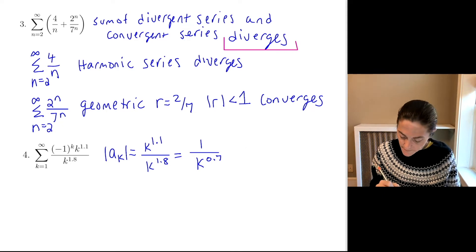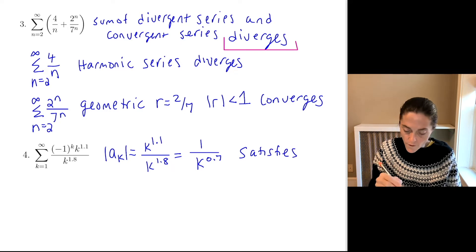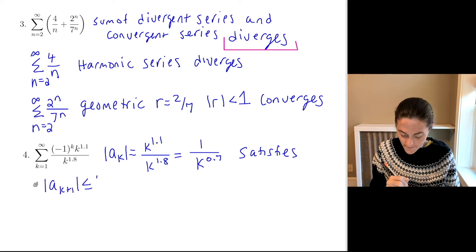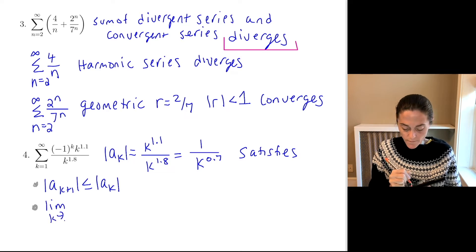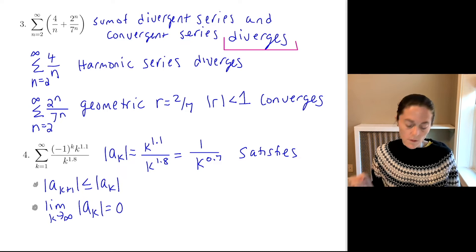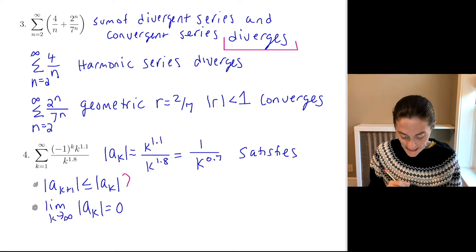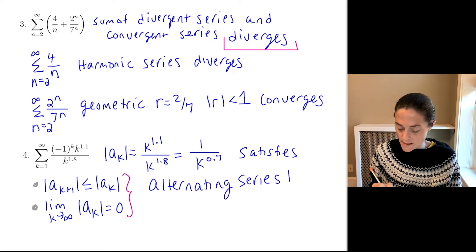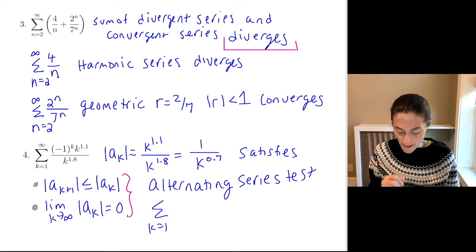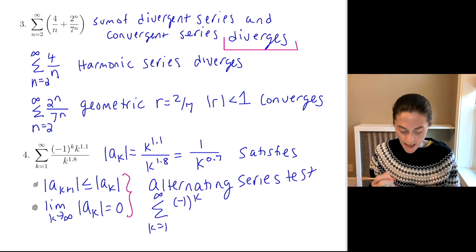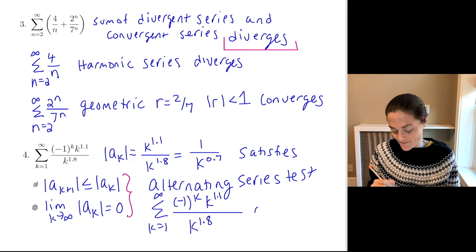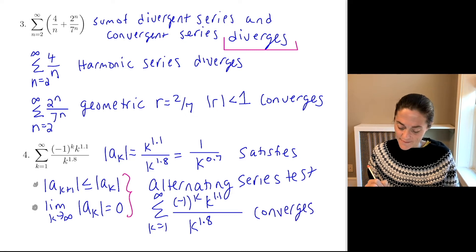Now, terms are going to 0 because the denominator is growing. We have a fixed numerator. We can use alternating series test here. So, this satisfies, first, this is definitely decreasing in absolute value. If you take a limit as k goes to infinity of the absolute value of a_k, we get 0. These two together, and the fact that my series is actually alternating, gives us that this converges. Alternating series test. Alternating series test says this series, k equals 1 to infinity of minus 1 to the k, k to the 1.1 divided by k to the 1.8, converges.